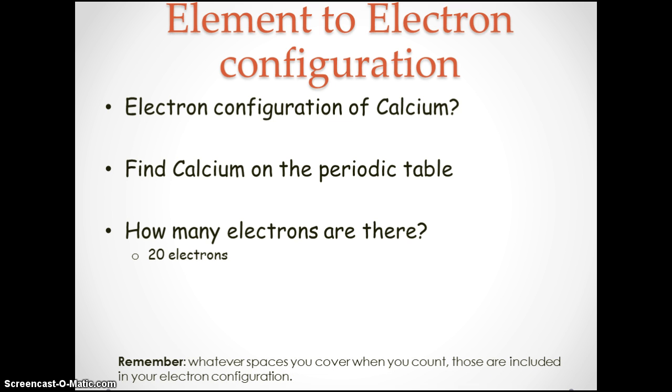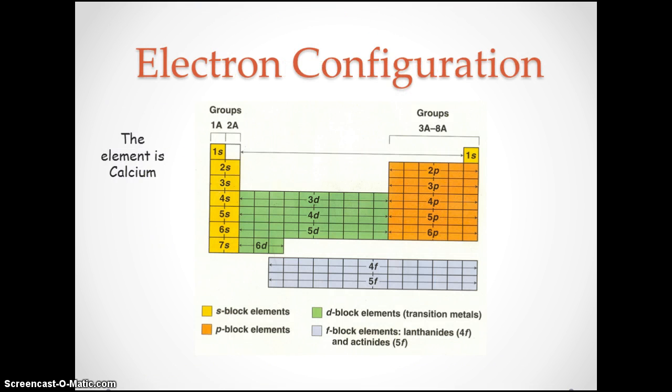So now that we know we have 20 electrons, we'll have to move 20 spaces in order to get our correct electron configuration. So counting to 20.